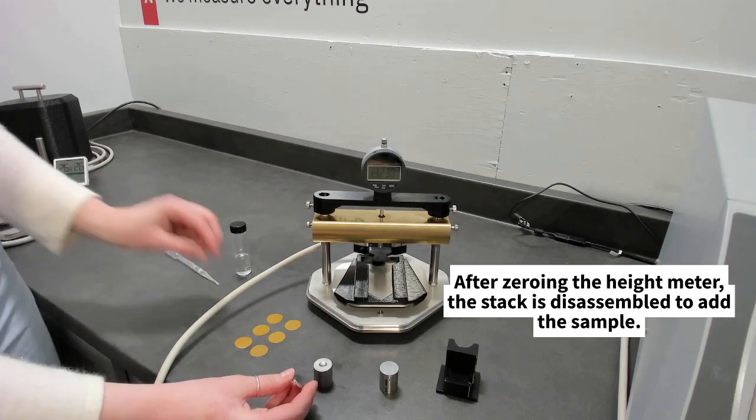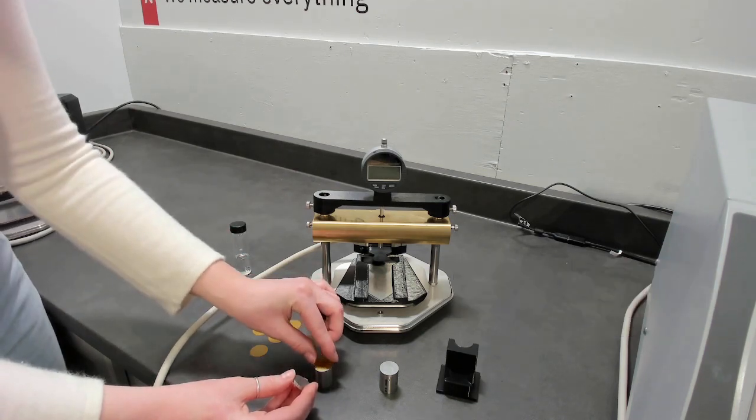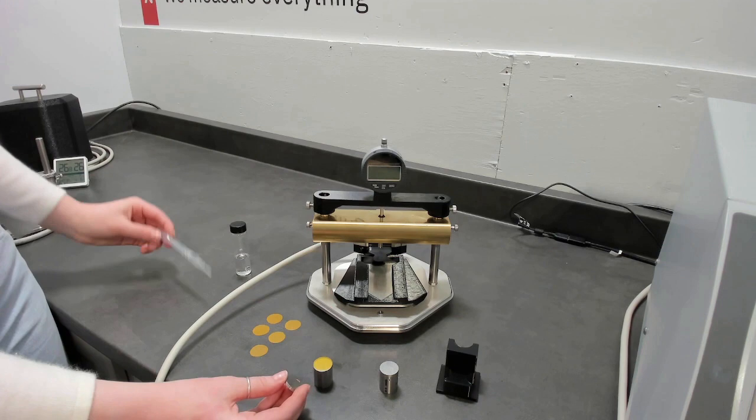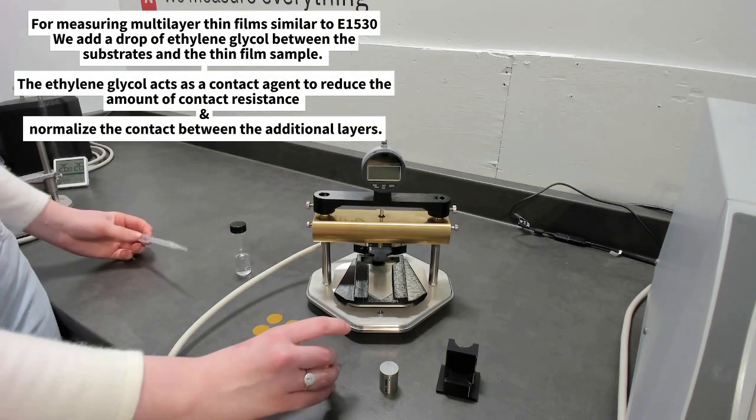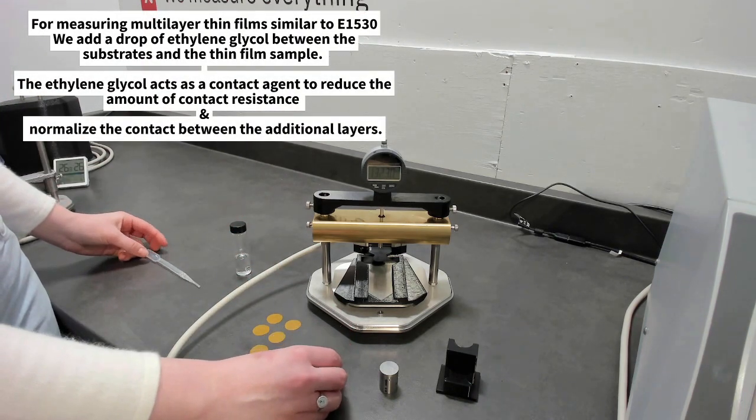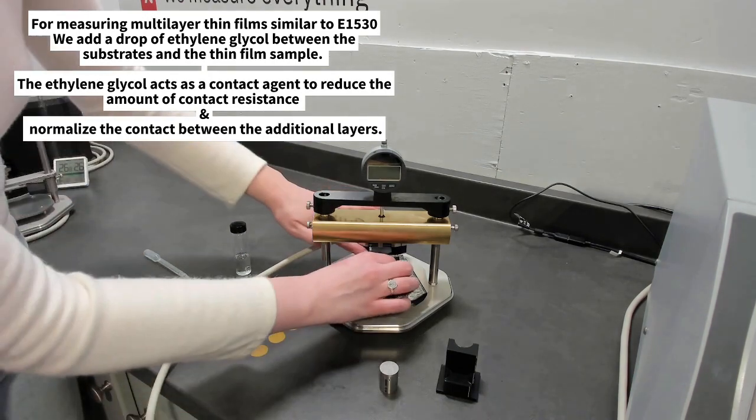For the measurement of multi-layer similar to ASTM E1530, we can use ethylene glycol or another liquid as a contact agent to normalize the contact between each additional layer we add.